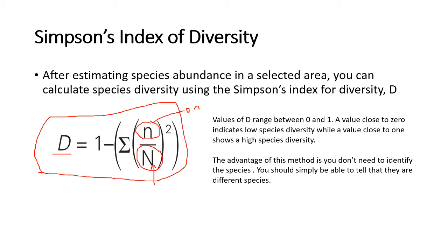D is your Simpson's index of diversity and D is typically between zero and one. So if your D value is higher than one then you need to redo your calculation because you have definitely made an error. So when the value is close to zero we often say that there is a low species diversity in that area and when the value is close to one then we say that it is a high species diversity.